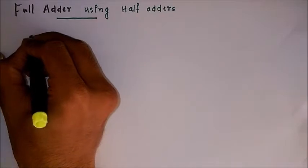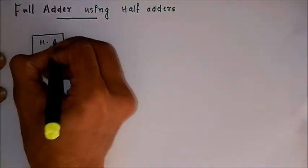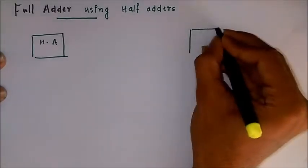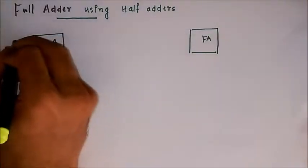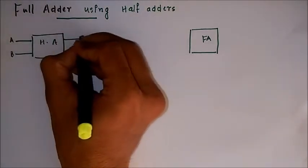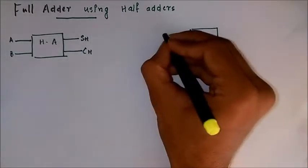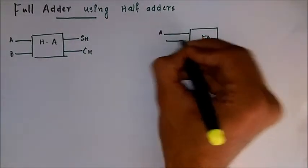Let's first write down the details of half adder and full adder. This is a half adder, this is a full adder. This has two inputs, single bit inputs A and B, and a sum and carry.